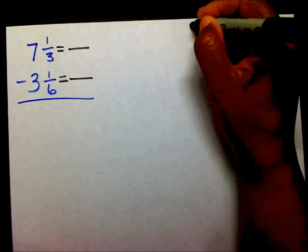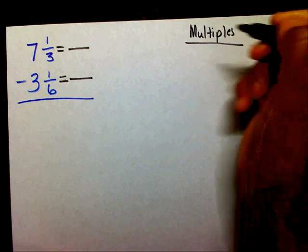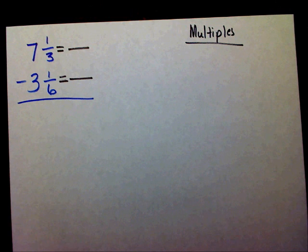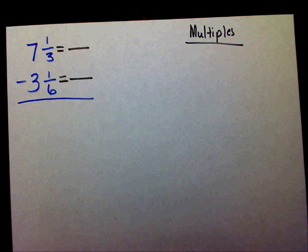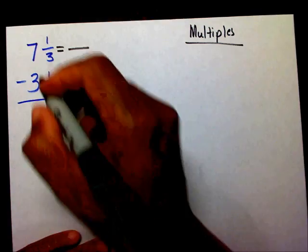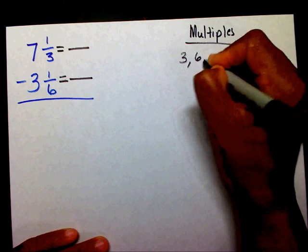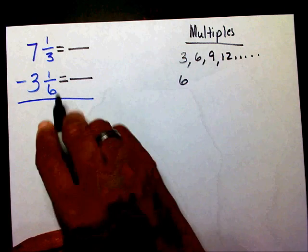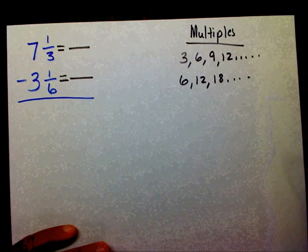So again, I'm going to list my multiples. And I know this process takes a long time, but you end up with the correct answer if you go through this process. If you try to take shortcuts, then you could possibly end up with the wrong answer. So I want to list all my multiples of 3. I have 3, 6, 9, 12, and I can go on and on. For 6, I have 6, 12, 18, and so forth.